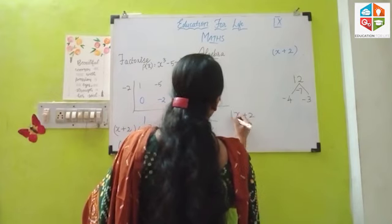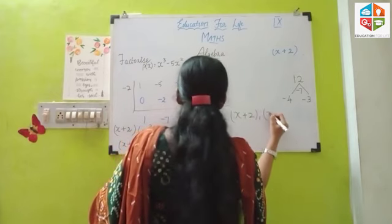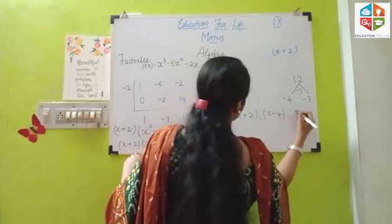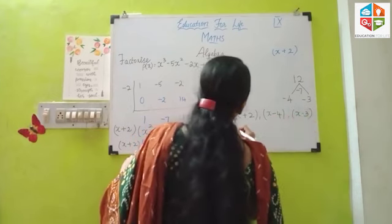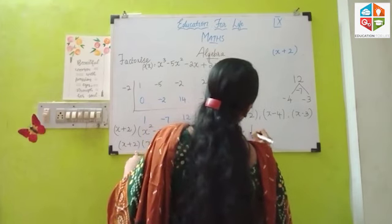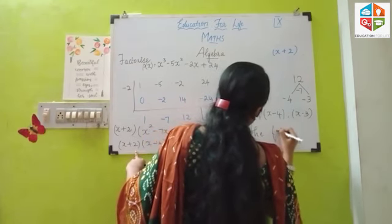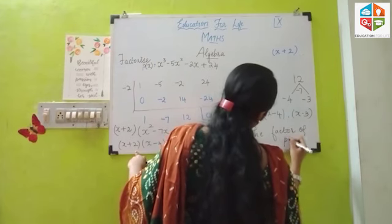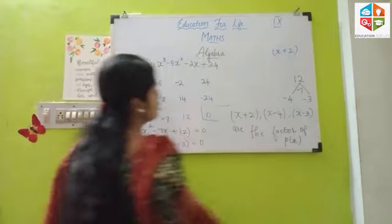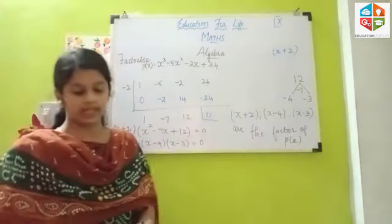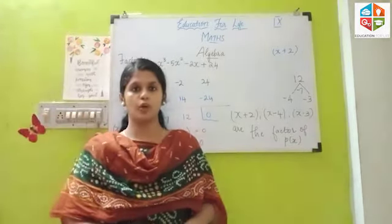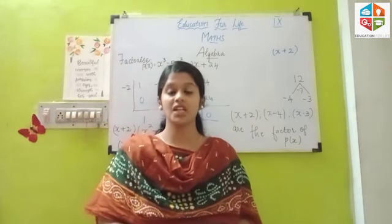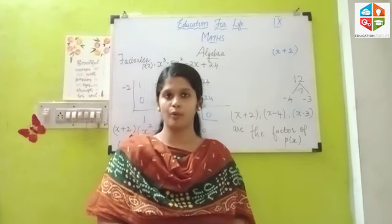Therefore, the factors for the given polynomial are X plus 2, X minus 4, and X minus 3. So for the given polynomial, these are the factors. This is how we factorize a given polynomial using synthetic division.